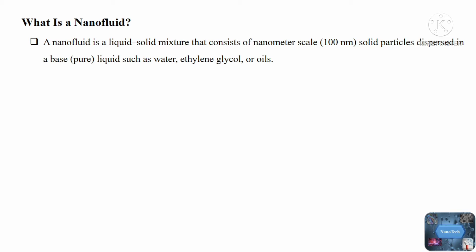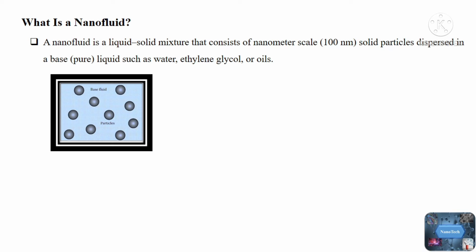A nanofluid can be classified based on its base fluid and the type of nanoparticles it contains. The concentration of nanoparticles in a nanofluid is an important parameter. This concentration is generally given as the nanoparticle volume fraction, which is defined as the ratio of the volume of the nanoparticles to the volume of the suspension.